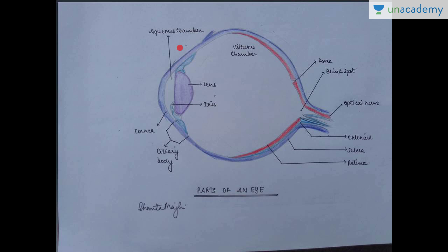Before going on to the chambers, in the anteriormost part of the eye, the sclera forms the cornea. The cornea is nothing but the extension of the sclera, but the only difference is the cornea is not opaque — the sclera is opaque. The white part of your eye is the sclera, a very tough fibrous layer. The cornea is transparent, which is why you can see through the central dark portion of the eye.